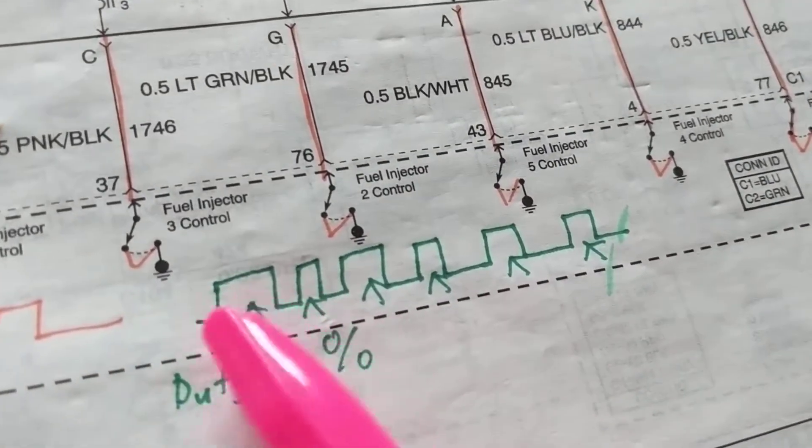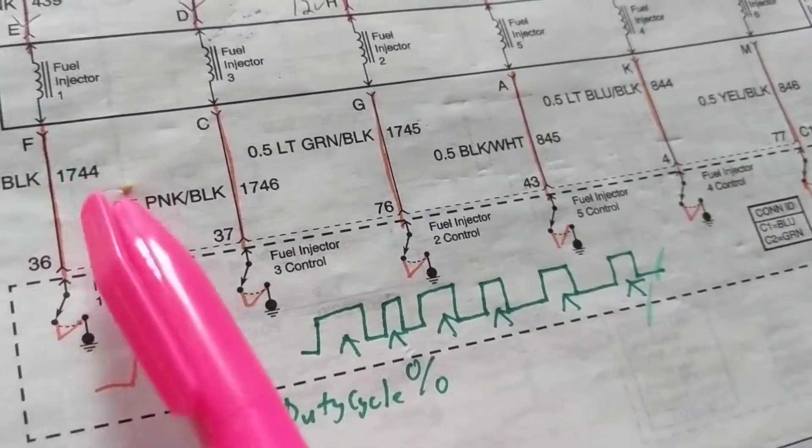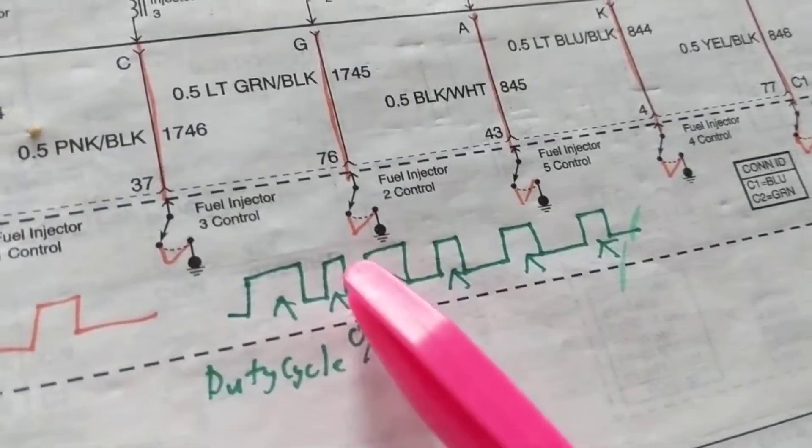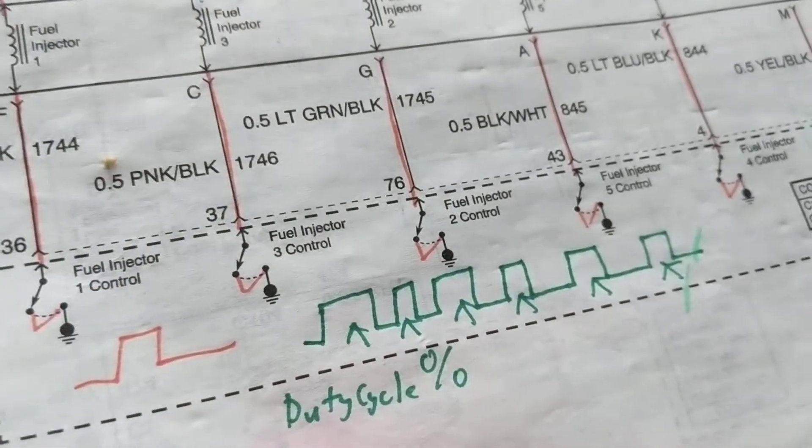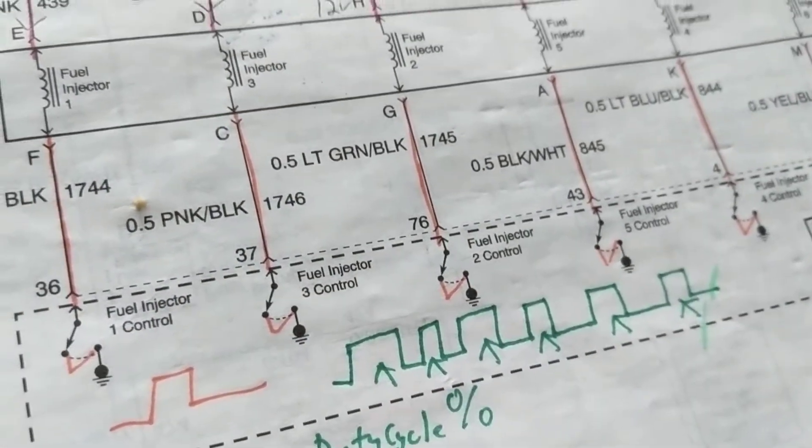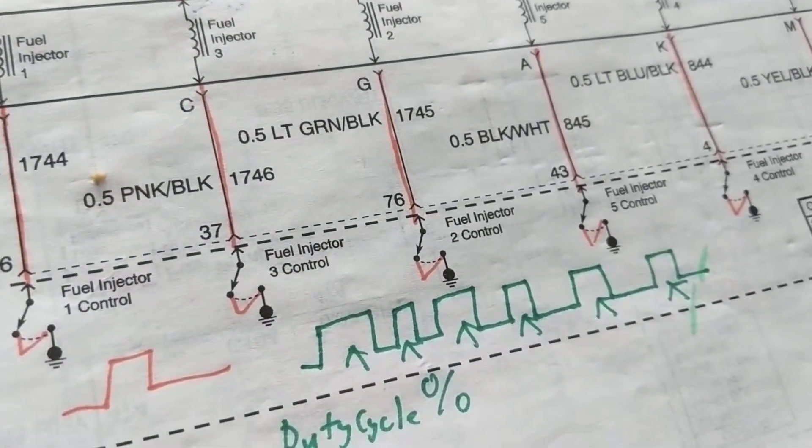The longer this pulse is, the more time on for the fuel injector. The shorter this is, the shorter the time that it's on. Based upon what? Based upon whatever the sensors give information.